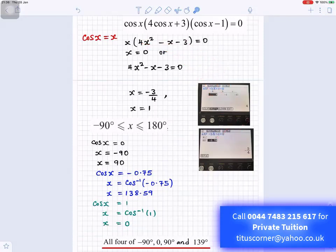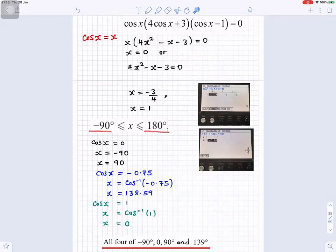So, cosx. We want the answers between minus 90 and 180. Cosx equals 0, that means x is minus 90 or x is 90. Cosx equals minus 0.75, and inverse cosine of minus 0.75 is 138.59. So, x is 138.59. Cosx equals 1, that means inverse cosine of 1 is 0. So, all your four answers are minus 90, 0, 90, and 139.